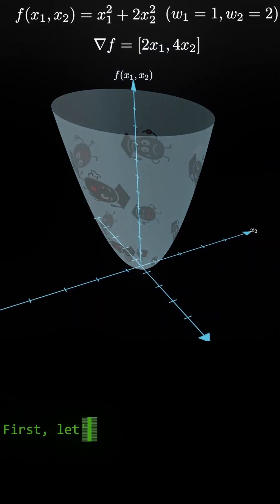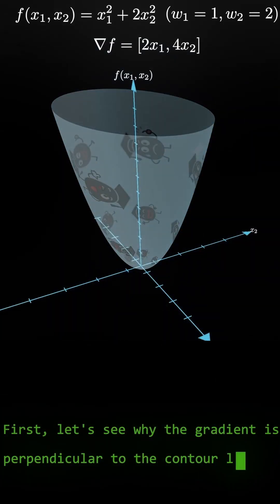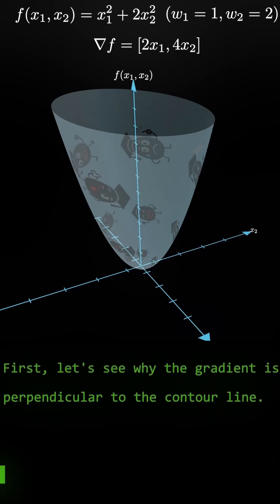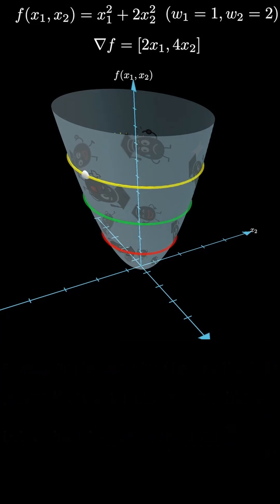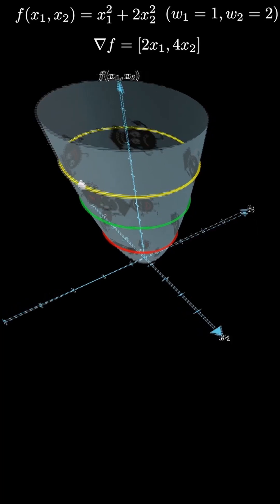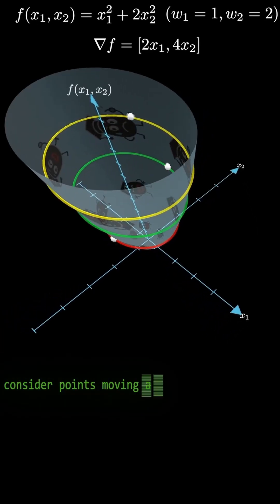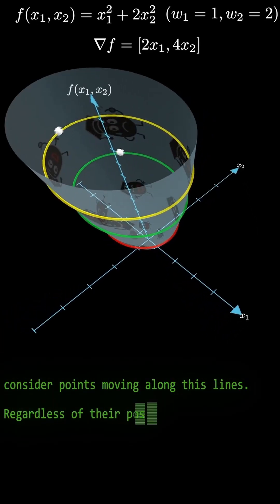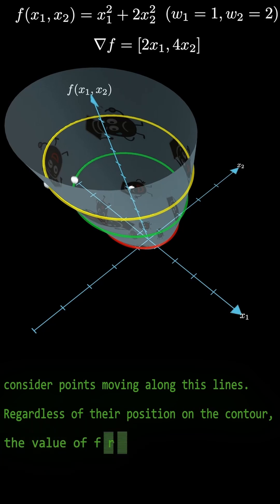Why is the gradient vector always perpendicular to the contour lines? Let's draw some contour lines first. Imagine a point sliding along that contour. As it moves along the contour, the function value f does not change, by definition of a contour.